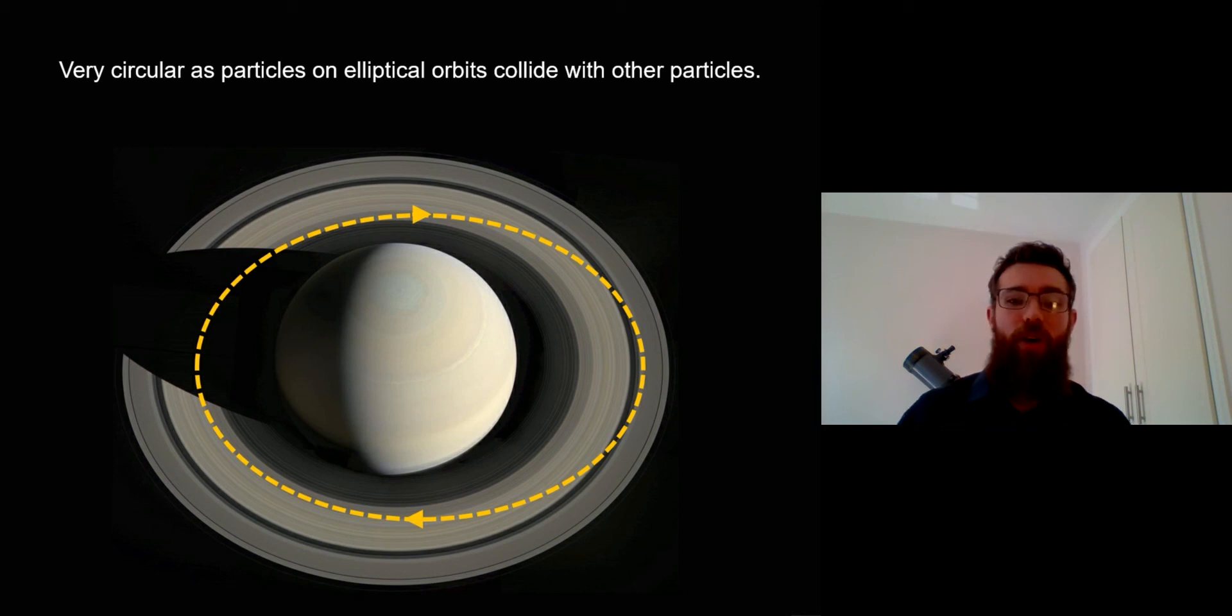That movement into the path of others and the collisions they then have stops that kind of outward and inward movement. If they're on an elliptical orbit they actually move away from the planet and towards the planet as they go around. But as they do so they'll collide with other particles, so it dampens down that movement and basically makes them more circular. It has to do with collisions between the particles as well as a few other things like tidal dampening.